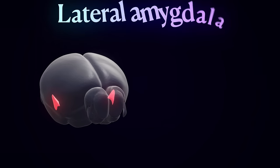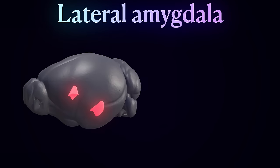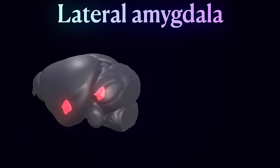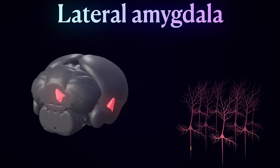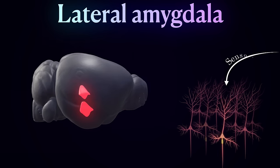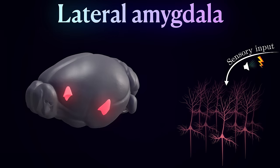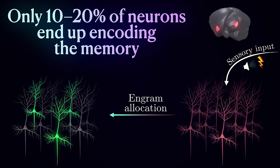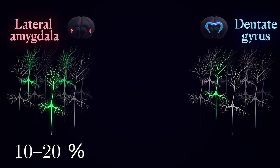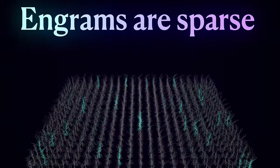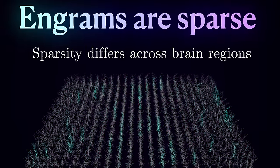Consider the amygdala, an emotional center of the brain, which has been shown to play a key role in such fear-conditioning tasks. Although the majority of amygdala neurons receive necessary sensory input and respond to both the foot shock and the tone, only between 10 and 20 percent of them become allocated to a given engram. And just in comparison, in the dentate gyrus, a region of the hippocampus, this number is much lower, between 2 and 6 percent. In other words, engrams are sparse, and the sparsity differs across brain regions.